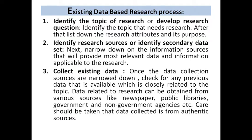Now let's discuss the process of existing database research. As a beginner, you can also undertake this. The first stage is to identify the topic of research or develop a research question, and list down the research attributes and its purpose. The next stage is to identify research sources or identify the secondary data set — narrowing down on information sources that will provide the most relevant data and information applicable to the research.